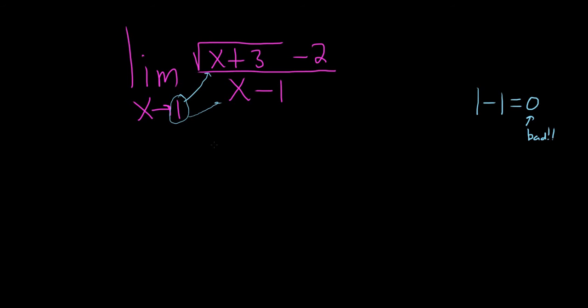And it doesn't look like this is factorable. So the idea is to do something called rationalize the numerator. So whenever you have something like this with the square root and you're adding and subtracting a number, that's the strategy.